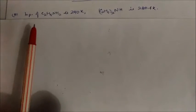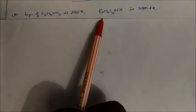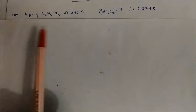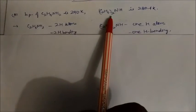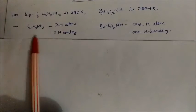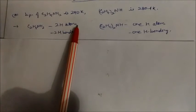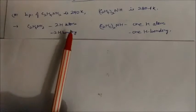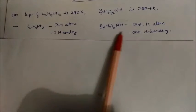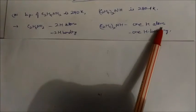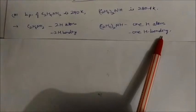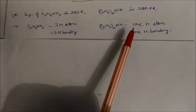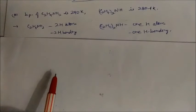The boiling point of ethylamine is 290 K, while diethylamine is 280.4 K — ethylamine is higher, diethylamine is lower. Ethylamine is a primary amine with two N–H hydrogens, allowing two hydrogen bonds, giving a higher boiling point. Diethylamine is a secondary amine with only one hydrogen atom, allowing only one hydrogen bond — so more hydrogen bonding means higher boiling point and less hydrogen bonding means lower boiling point.